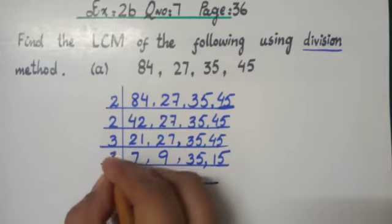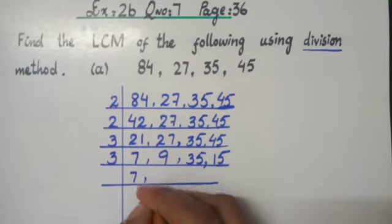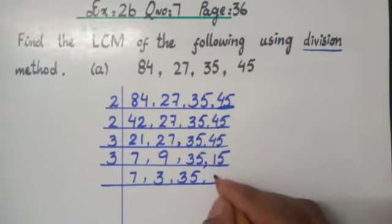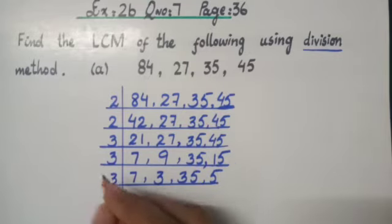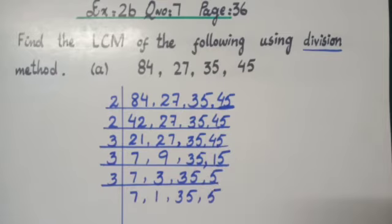This is why we will solve with 3 again. 3 7s are 21, giving us 7. 3 3s are 9, giving us 3. 35 will be as it is. 3 5s are 15, giving us 5. Now, I have only 1 three left. 3 1s are 3, giving us 1. 35 will be copied as it is. And 5 cannot be solved by 3, so as it is copy down ker diya.